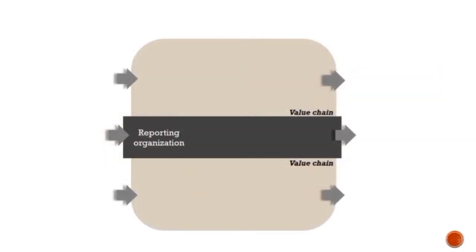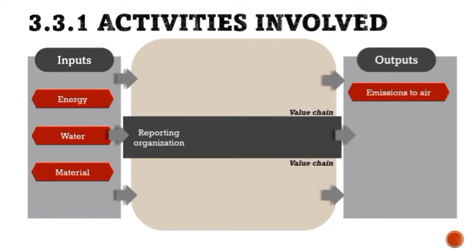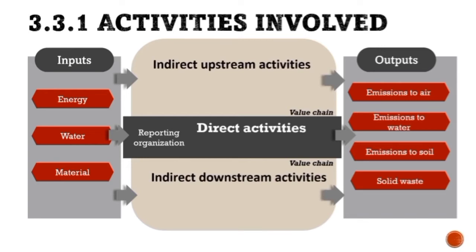The inventory should include all inputs such as energy, water, and material, and outputs such as emissions to air, water, soil and solid waste generated. The inputs and outputs are connected with the activities involved, which can be classified as direct and indirect activities. The examples of direct activities are organization vehicles, equipment and facilities.